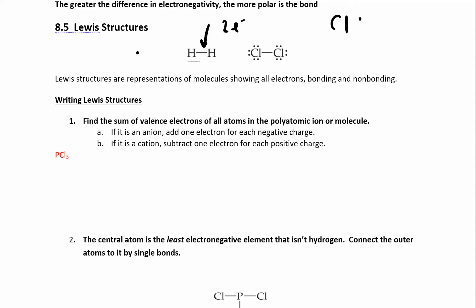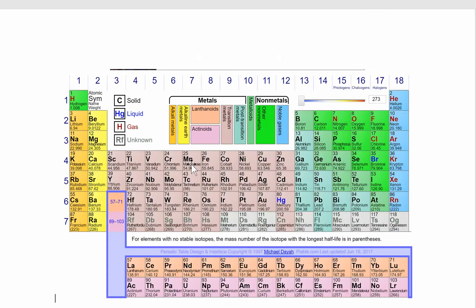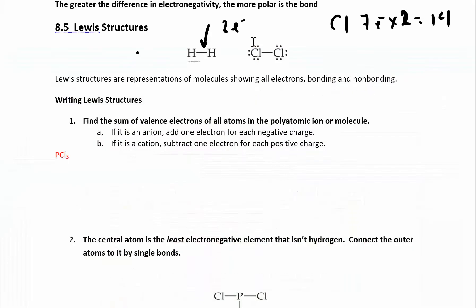For chlorine, each chlorine has seven valence electrons. Since I have two chlorines, I have 14 valence electrons total. If you're confused about valence electrons, go back to your periodic table — hydrogen has one, and chlorine has seven. So since I have two chlorines, I have 14 electrons total. I have a single bond here, which means two electrons in that bond, and then 12 more around the chlorines, giving me a total of 14 electrons.